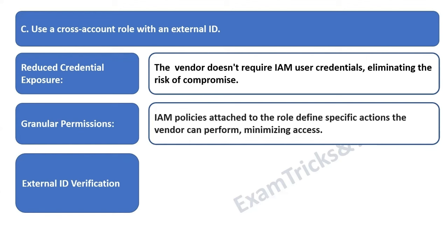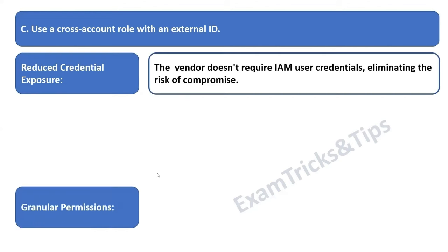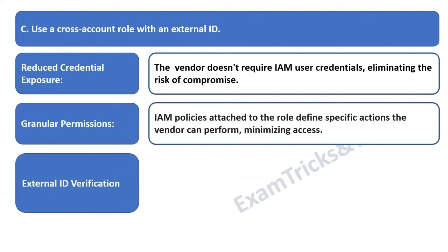You're not providing any IAM credential; instead you use something like an authentication ID, employee ID, or network ID which sits on the vendor's system. That ID is used for cross-authentication across the account. This frees you from giving your own credentials and also creates accountability by ensuring a link between your business and the vendor through that ID. This is how option C — use cross-account role with an external ID — satisfies all the requirements in the problem scenario.